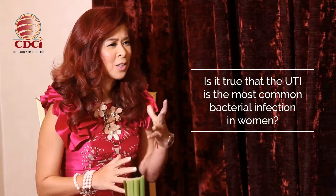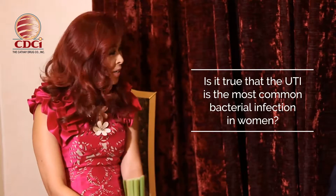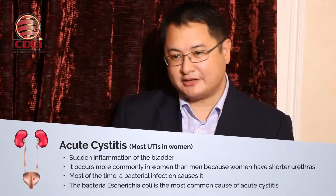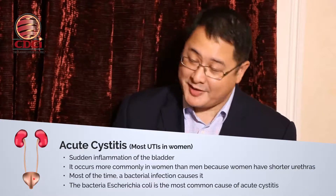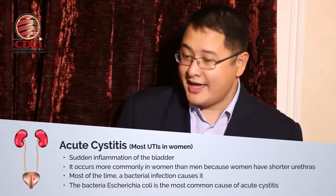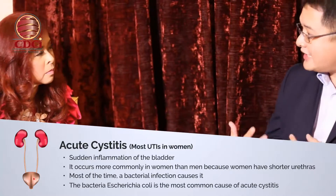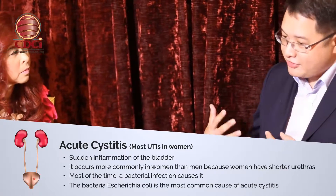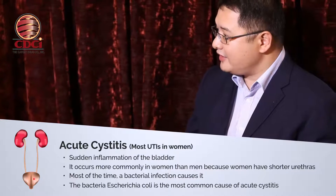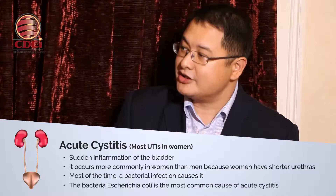Is it true that UTI is the most common bacterial infection in women, and if so, why is that? Urinary tract infections are most common especially in women because women have a short urethra, and it is fairly easy for bacteria from the outside — especially those coming from the perineum — to migrate into the urethra and go up the urinary tract and cause infection.